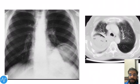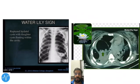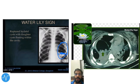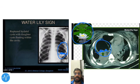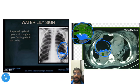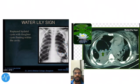The Water Lily sign shows an air-fluid level with a bump above it on both X-ray and CT, matching the drawn diagram. The inner layer is ruptured and has fallen down, with the air-fluid level giving the appearance of a water lily floating on water.